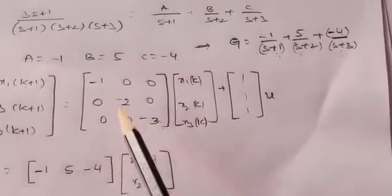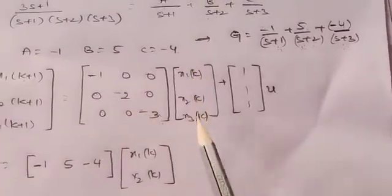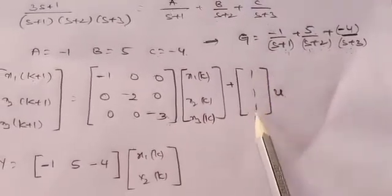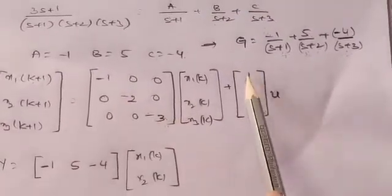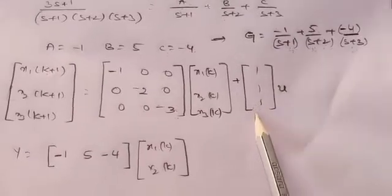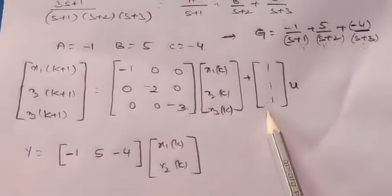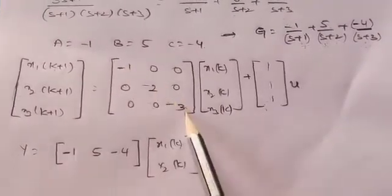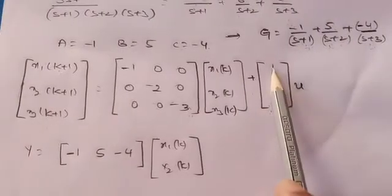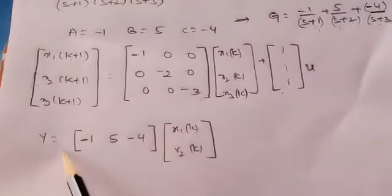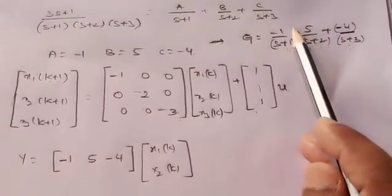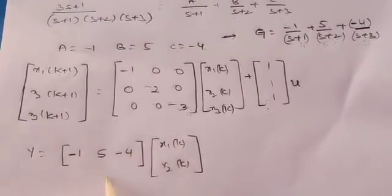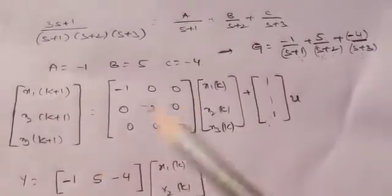The A matrix has poles on the diagonal: [−1, −2, −3] with zeros elsewhere, multiplied by state vector [x1, x2, x3], plus B matrix. The B matrix is always a unit matrix — [1, 1, 1] — when poles are not repeated. For the output, y equals the C matrix: the numerator coefficients [−1, 5, −4].